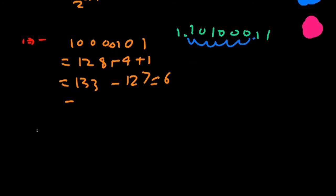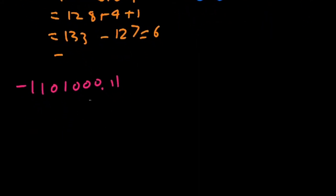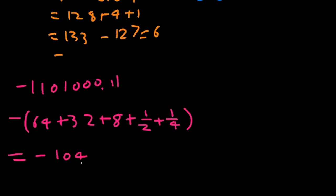So our final number in binary is negative 1101001 point 11. And now we can convert that into decimal which would be negative 64 plus 32 plus 8 plus... Because it's after a decimal point we have fractional values of half plus a quarter which adds up to be negative 104.75 and that's our final decimal number.